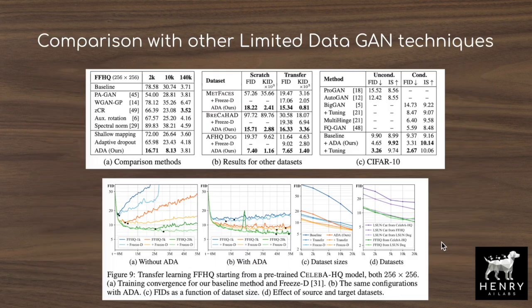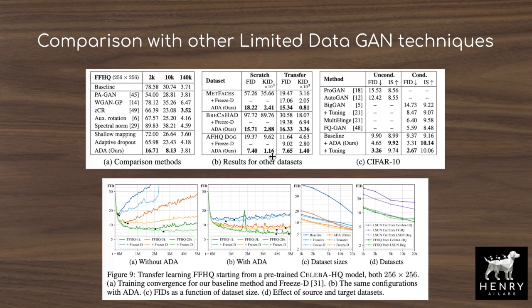Another promising solution to the limited data GAN problem is transfer learning. The freeze discriminator algorithm freezes the parameters of the first K layers of the discriminator and only fine-tunes the remaining N minus K layers. This transfers low-level features learned on larger datasets like ImageNet or face images used to train StyleGANs, and fine-tunes onto limited data settings like MetFaces, breast cancer images, or dog images. Transfer learning scores 9.02 compared to 7.4 for adaptive discriminator augmentation on the dog dataset — not far off — making it a really interesting complementary area for research.